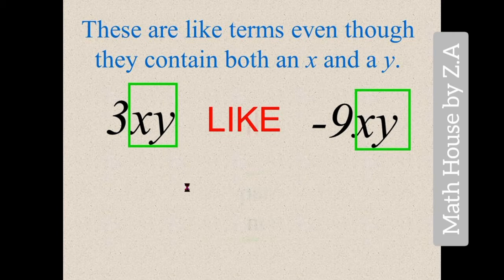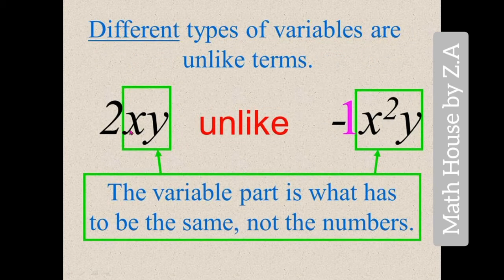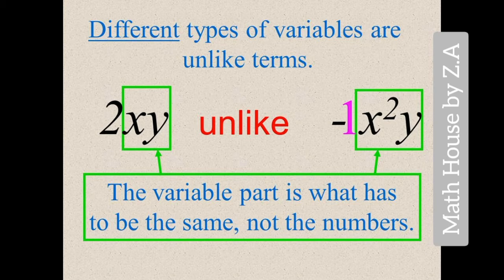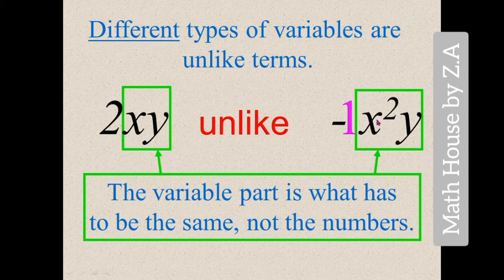For unlike terms, we have different variables — coefficients and signs don't matter. To determine like and unlike terms, we focus on the variables. If variables are the same, they are like terms; if different, they are unlike terms. For example, 2x and -x²y have the same variables x and y, but x has power 1 in one term and power 2 in the other. We must check both variables and exponents — if both are exactly the same, they are like; if different by variable or exponent, they are unlike.